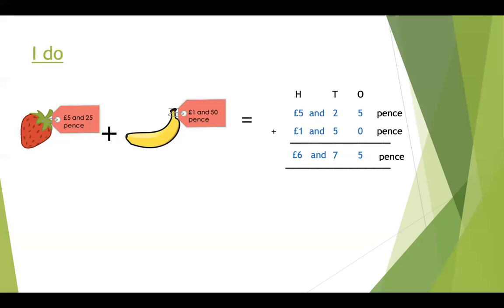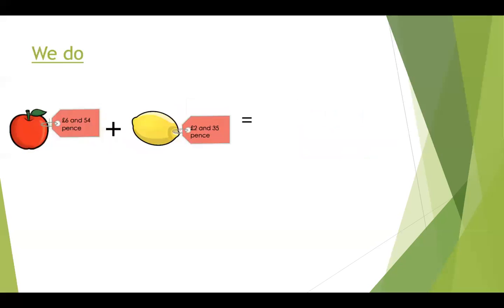Let's try one together. So for our We Do, once again we've got two very expensive fruit. We've got an apple for six pounds and fifty-four pence, and we have a lemon for two pounds and thirty-five pence. So once again we'll put it into our column addition.